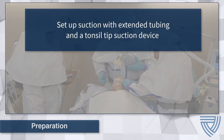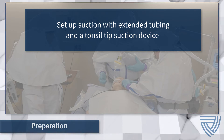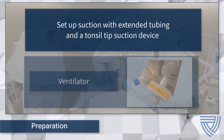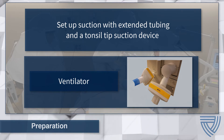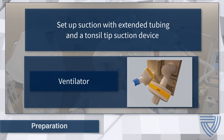Prepare the airway supplies and medications at the bedside. Set up suction with extended tubing in a tonsil tip suction device. Prepare the ventilator for use. This may include the use of a heat moisture exchange filter between the ET tube and circuit to reduce any aerosolized secretions.